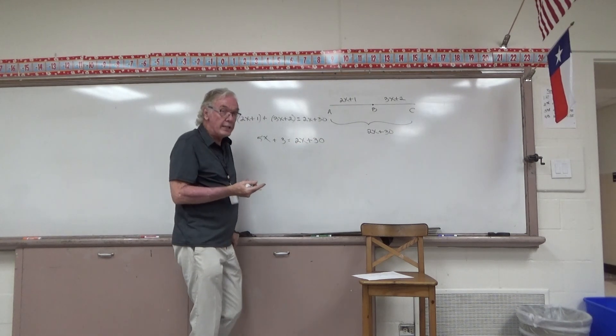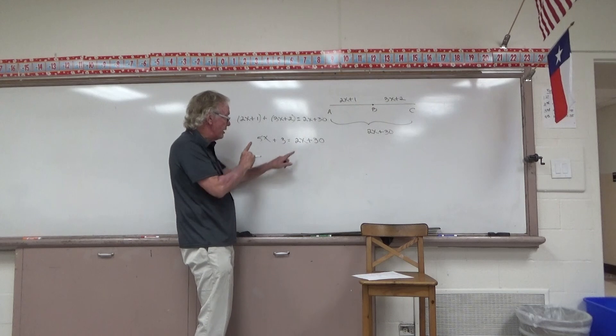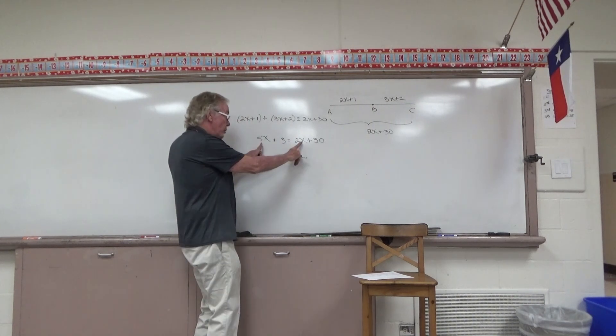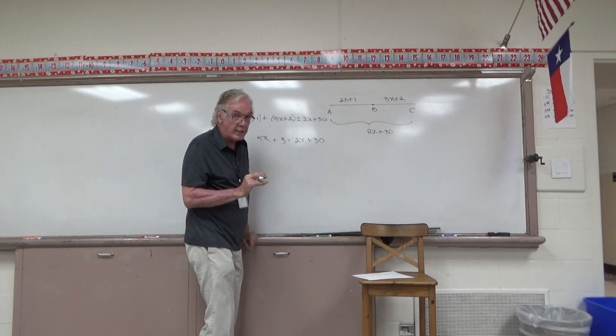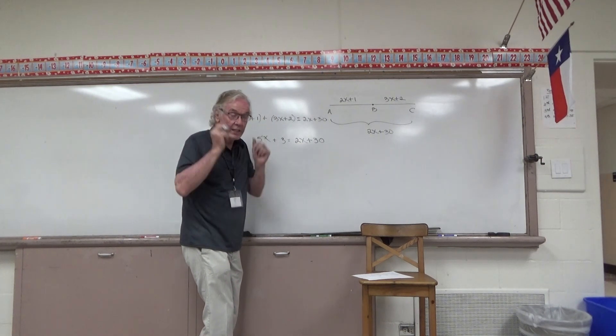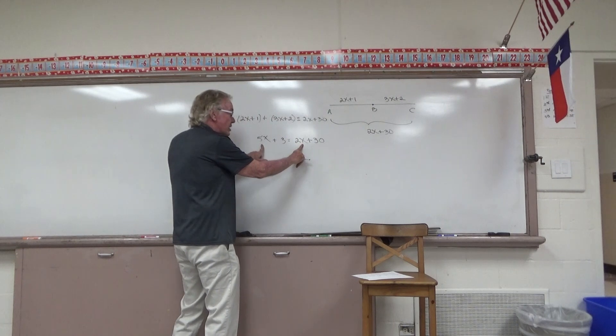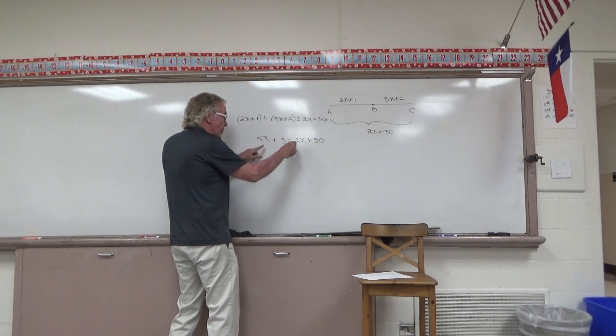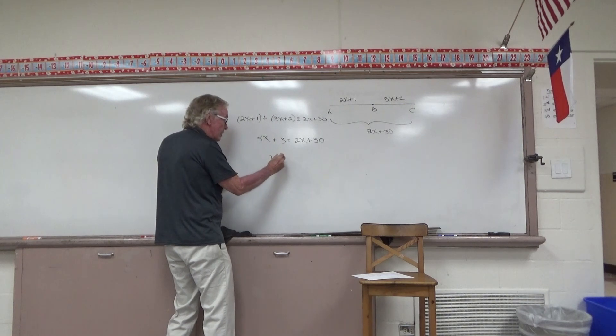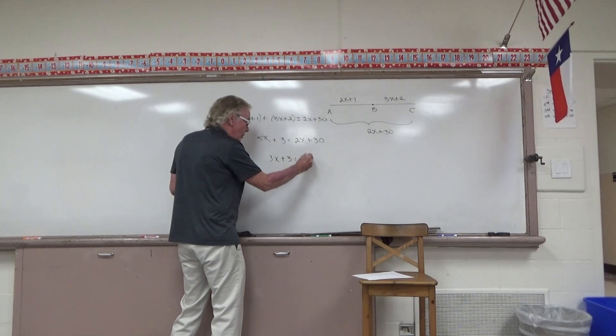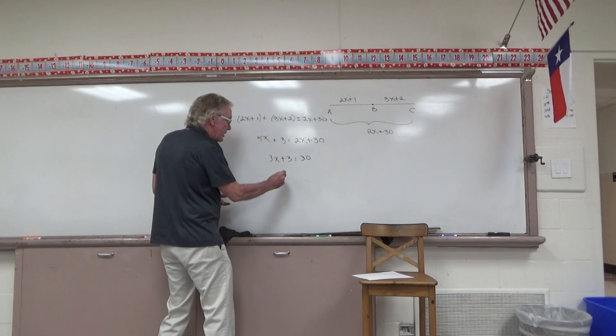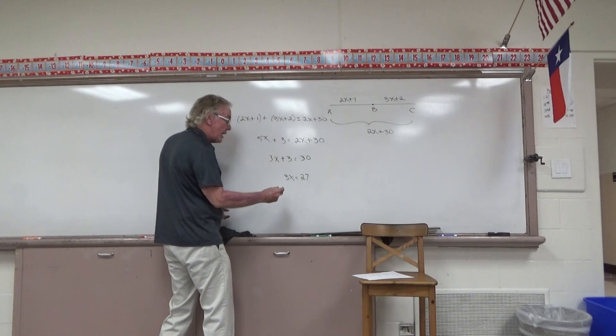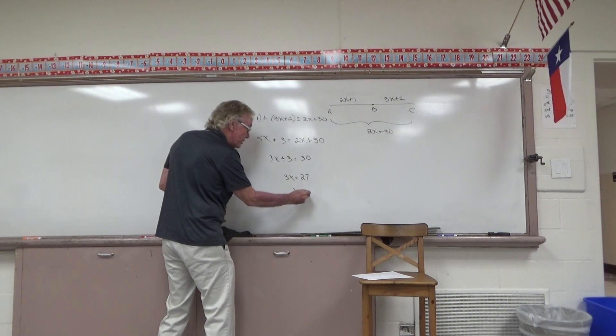Now this is a little bit of an interesting place. I've got a 5X here and a 2X there. Should I call that 7X? No, that's not how this could work. Because the 2X and the 5X are on opposite sides of the equal sign, I should subtract the smaller one and subtract 2X from both sides. If I were to do that, subtracting 2X from both sides, I'd have 3X plus 3 is equal to 30. Subtract 3 from both sides, and I'd have 3X is equal to 27. Dividing both sides by 3, I'm convinced that X is equal to 9.